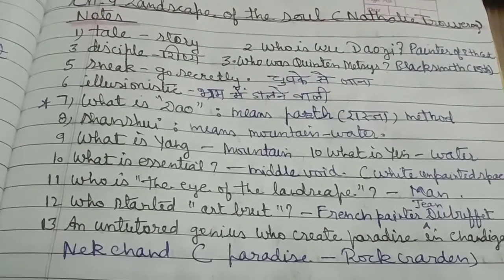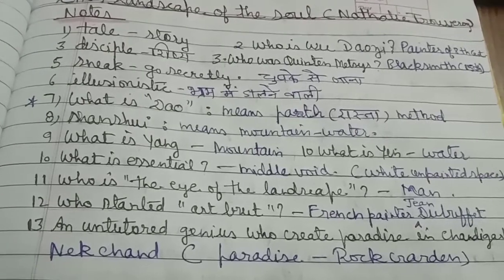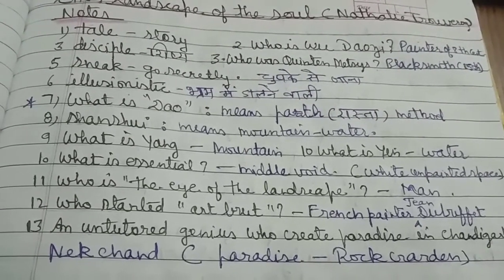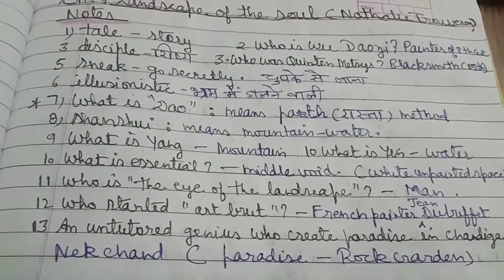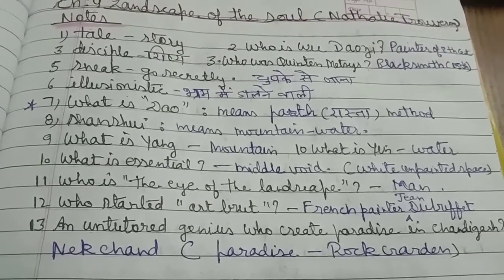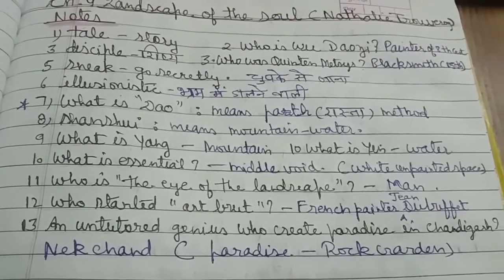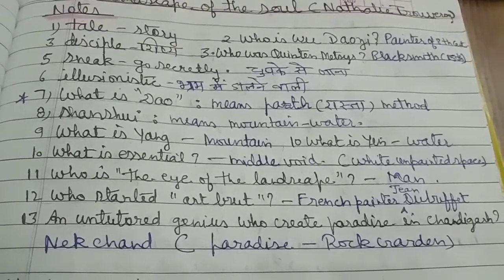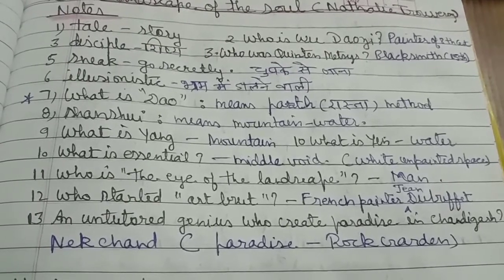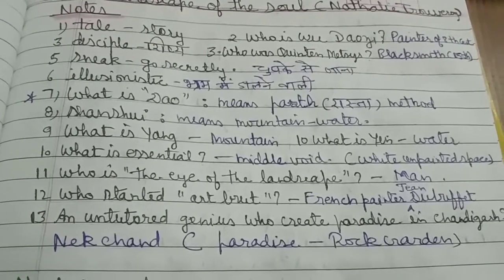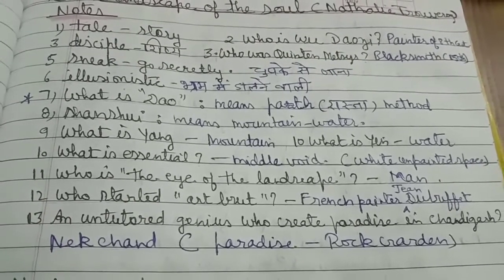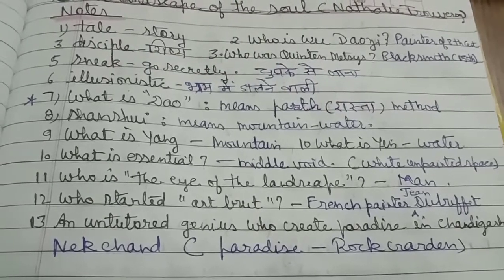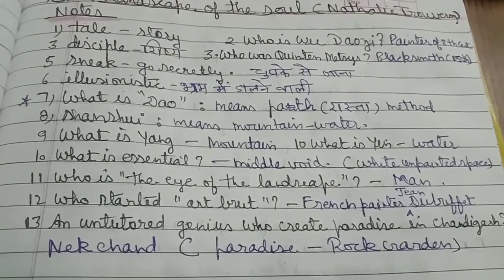Who started Art Brut? French painter Jean Dubuffet started Art Brut. An untutored genius who created paradise in Chandigarh — who is this? Nek Chand. And what is the paradise? His rock garden in Chandigarh — the rock garden in Chandigarh was built by Nek Chand.